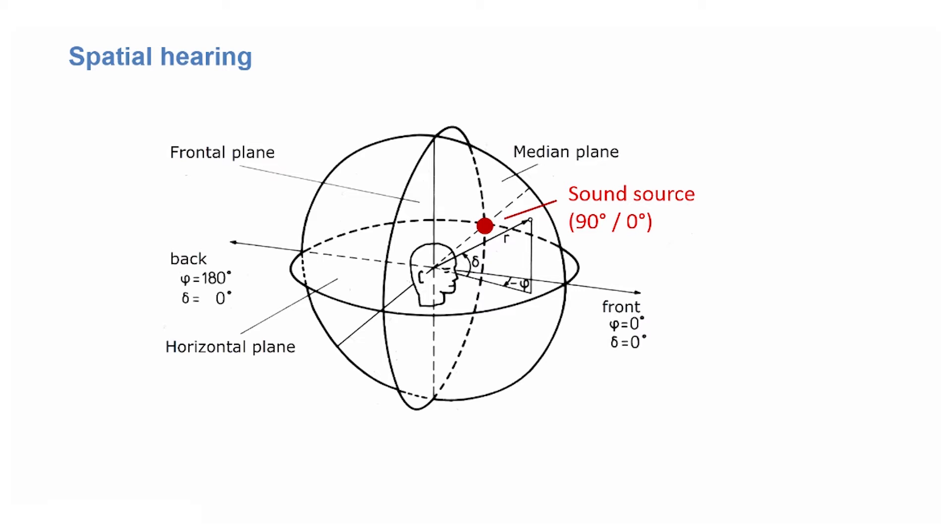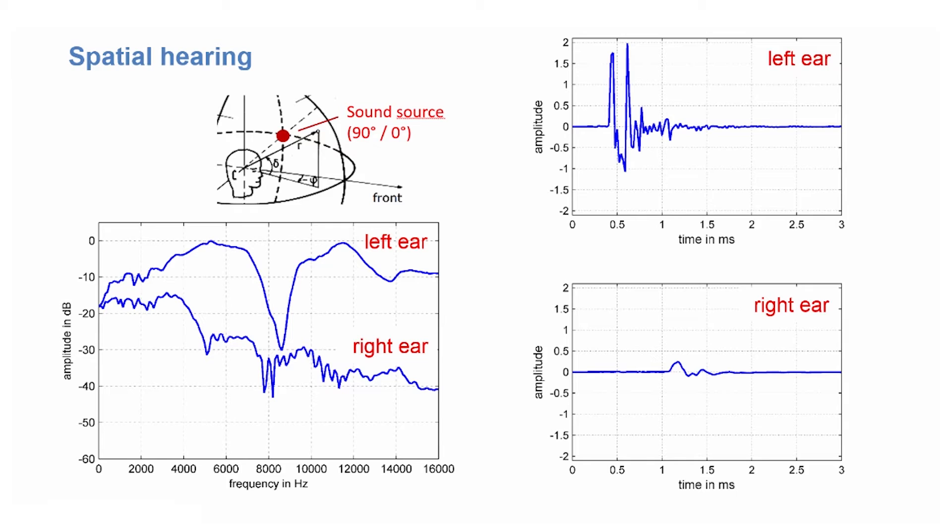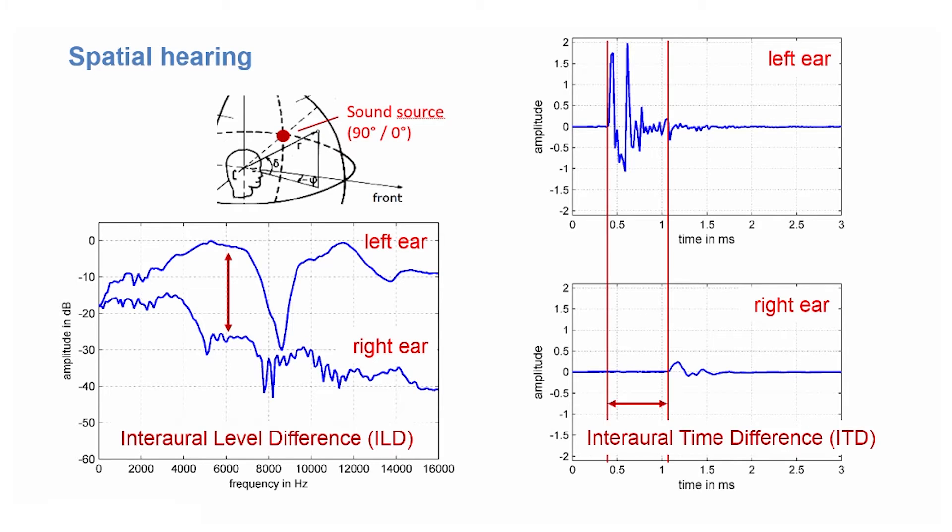The exact values for these inter-aural differences can be extracted from the impulse response and the transfer function corresponding to this angle of incidence. The so-called head-related impulse responses, which you see at the right, or the head-related transfer functions, HRTFs, at the left. Both can be converted into each other by Fourier transformation. There you can now read off the inter-aural time difference and the inter-aural level difference, the latter one strongly depending on frequency.